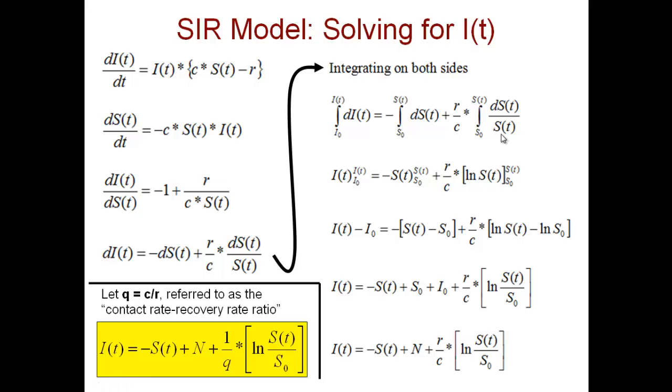So dS(t) divided by S(t). Now integrate this: it is I(t) and you apply the lower limit and upper limit. So I(t) equals minus S(t) from S₀ to S(t) plus r over c times dS(t) divided by S(t) is logarithm of S(t), and that is S₀ to S(t).